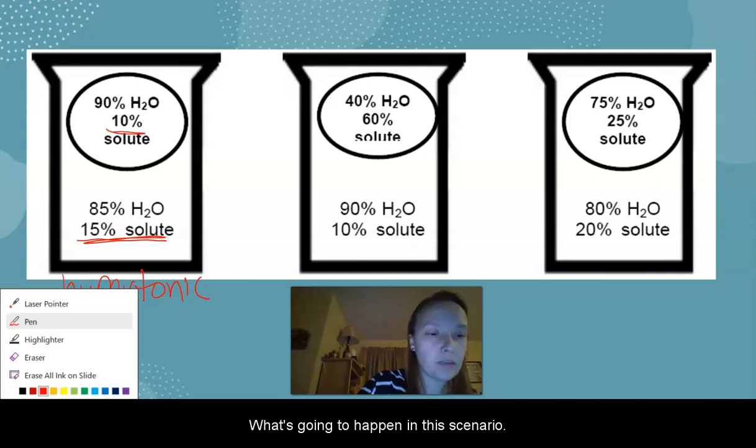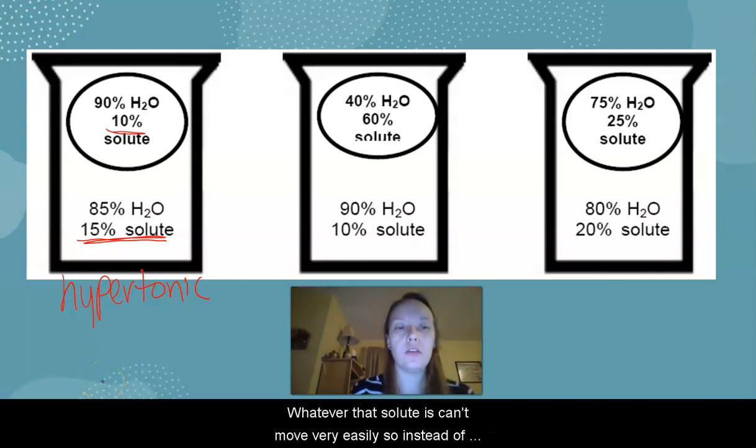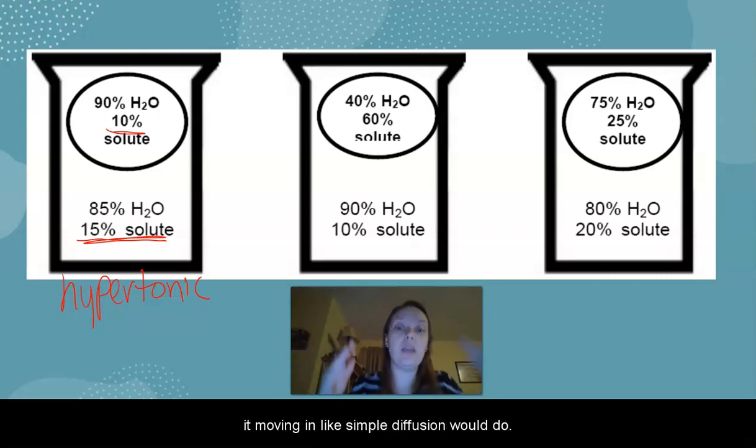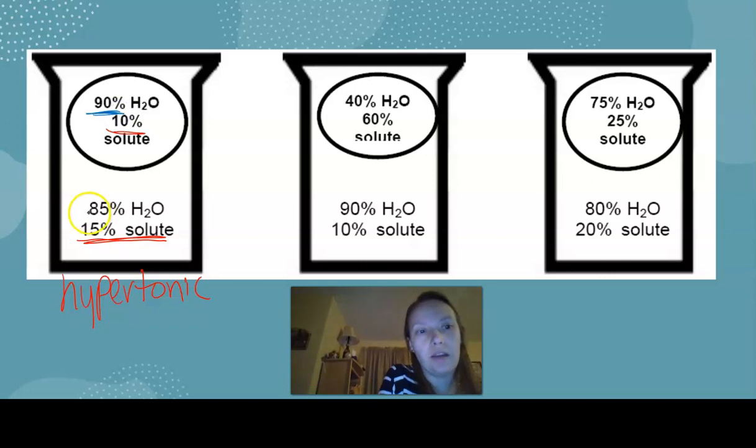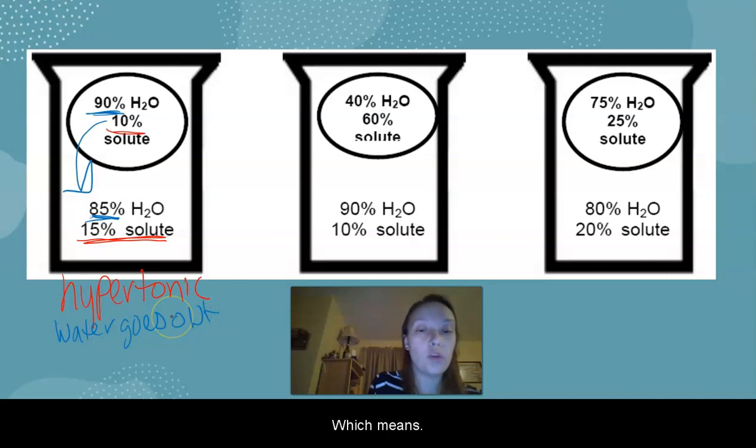So what's going to happen in this scenario is whatever that solute is can't move very easily. So instead of it moving in like simple diffusion would do, the water is the one that responds because it can move more easily. So we look in here and the water is 10% and the water is 85%. So the water will move out of the cell. So the water goes out, which means the cell will shrink.